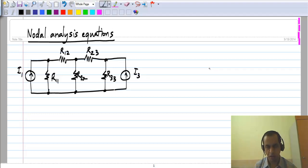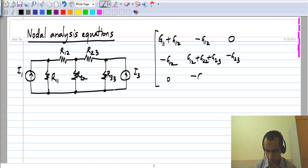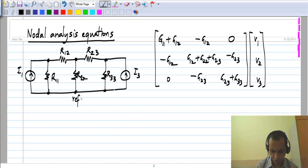We have got the nodal analysis equation to be V1, V2, V3, where this is the reference node and these three nodes have V1, V2, V3 with respect to the reference node, equals the source vector I1, 0, and I3.